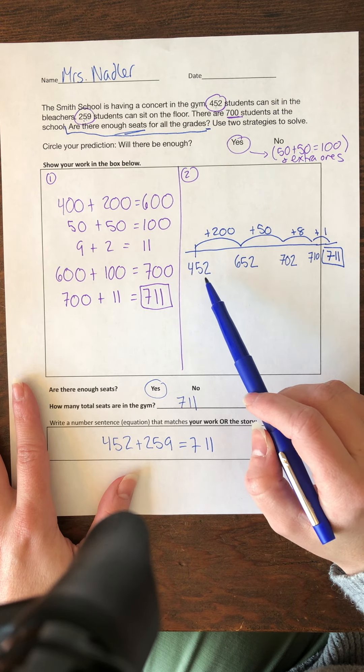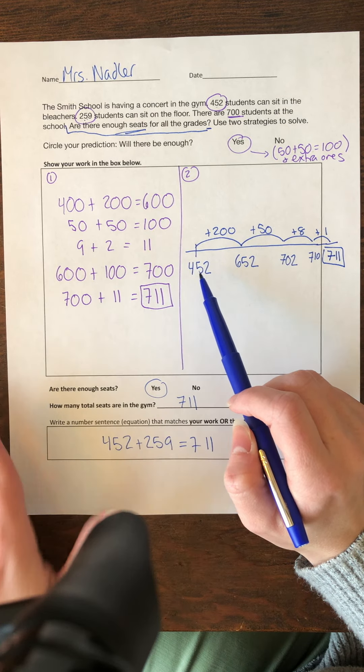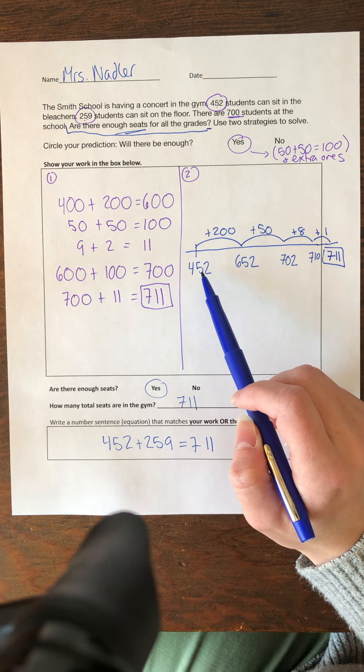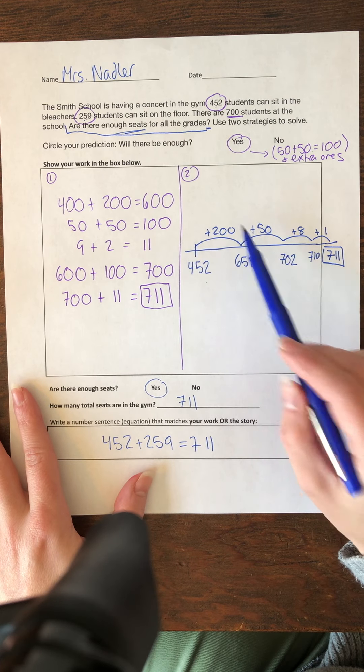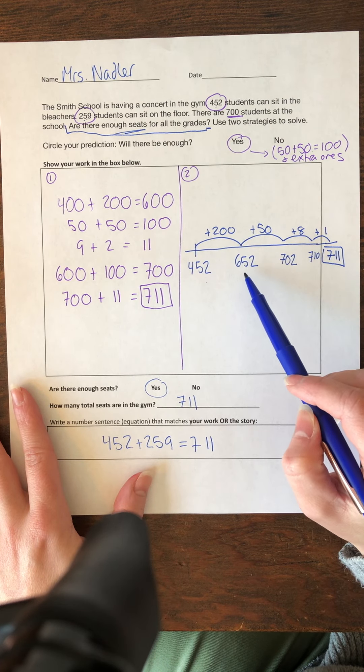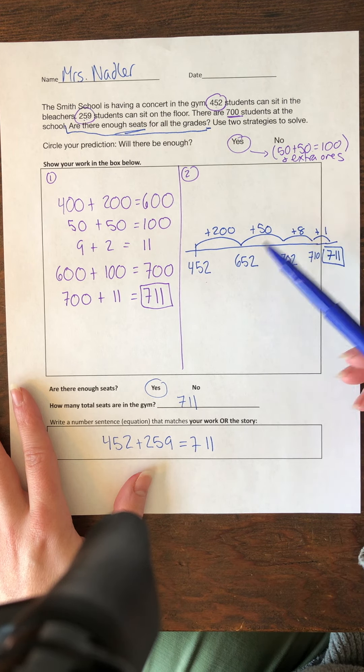Then here's my number line. And here I started at that 452. I kept 452 whole and I broke up 259 to make friendly jumps. So I jumped 200, 600. I got to 652. I jumped 50 and 8 and a 1.